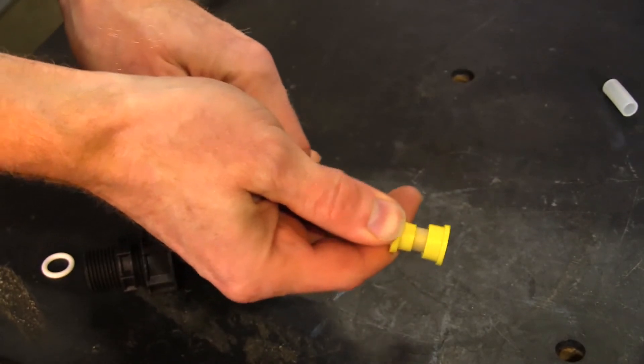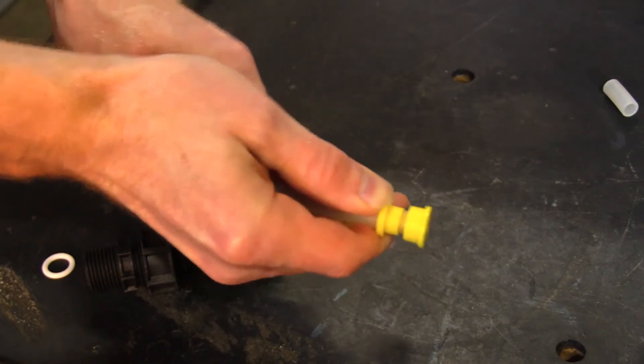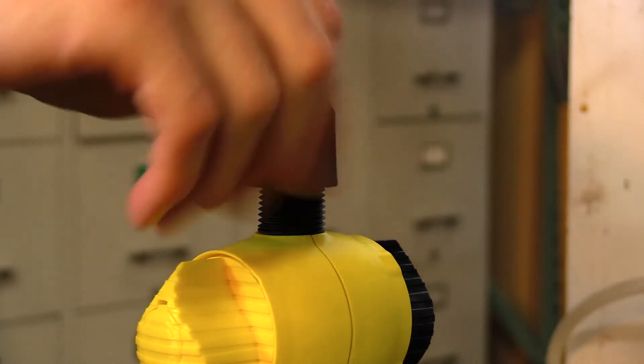Slide the female ferrule down, pressing tightly into the male ferrule. Then screw the coupling nut back into the pump.